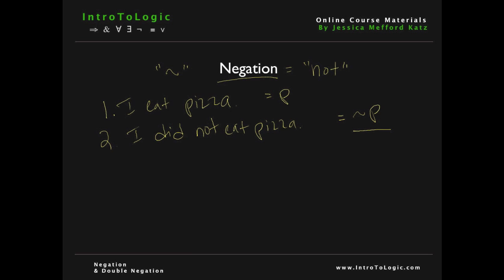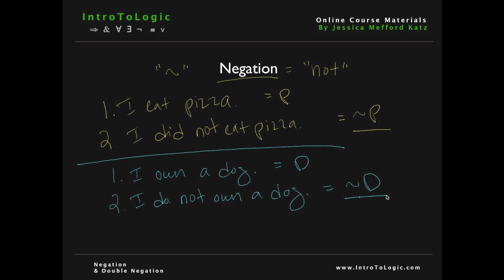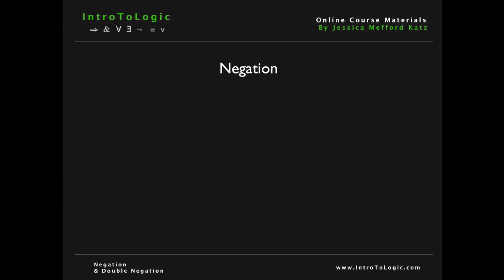Consider another example. Number one, I own a dog, and we can represent this with the letter D. The negation of number one, I do not own a dog, can be represented with tilde D. It's not the case that I own a dog. Keep in mind that the negation of a sentence is the original sentence plus a new negation in front of that sentence.